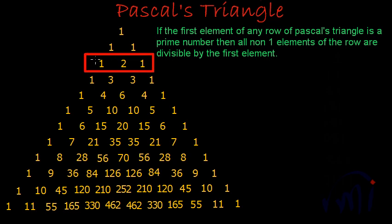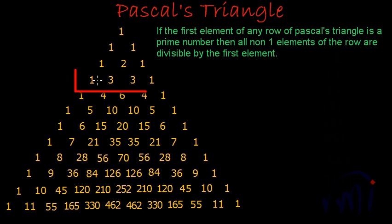For the second row, the first element is two, and two is the only non-one element — the first and last elements are ones — so there's nothing to check. For the third row, the first element is three and the second element is also three, which is definitely divisible by three, as any number is divisible by itself.